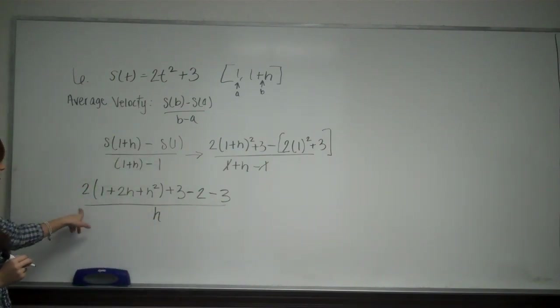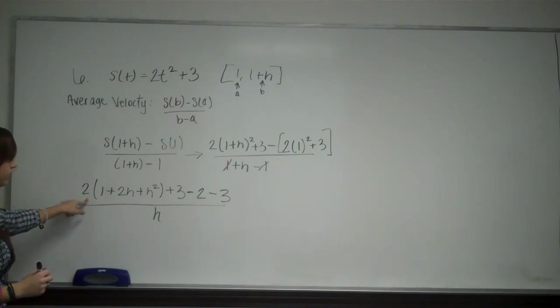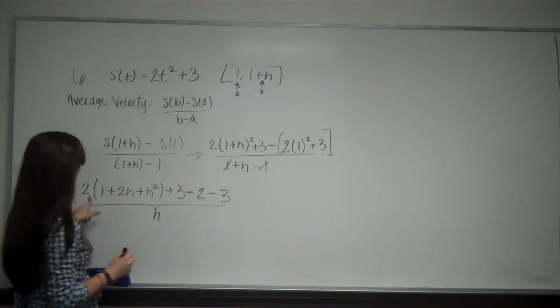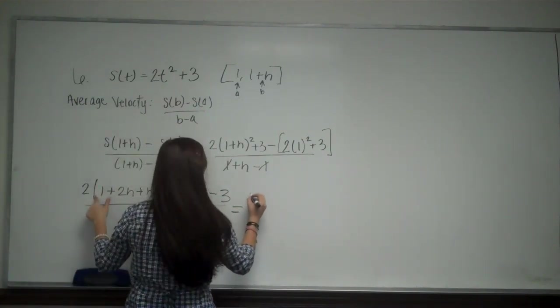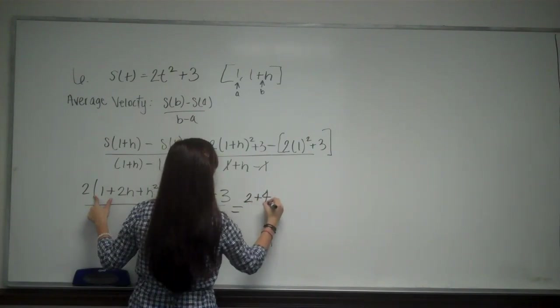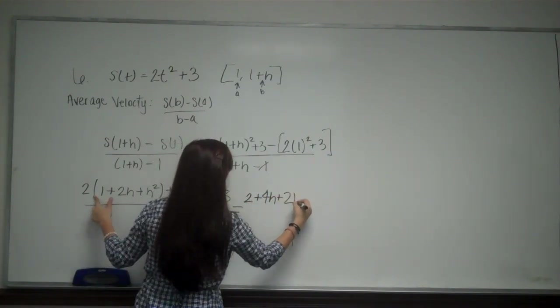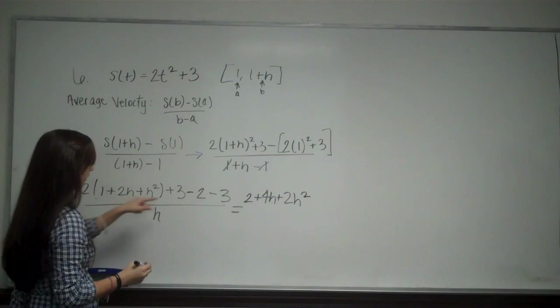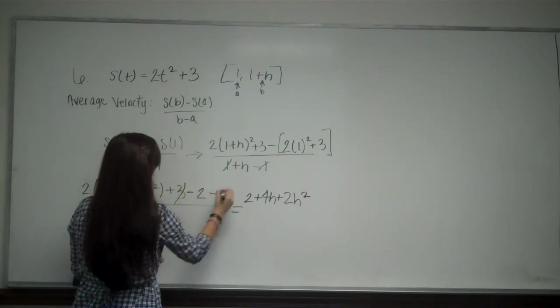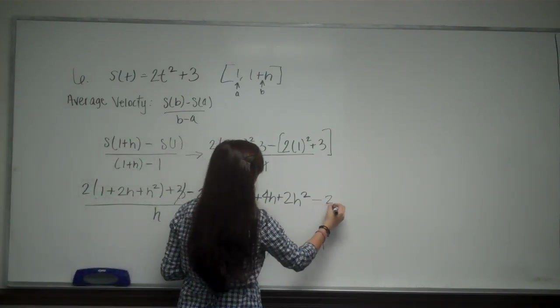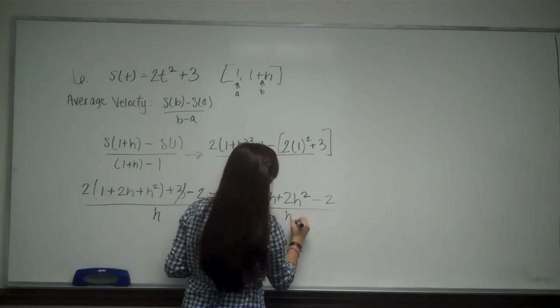All I have to do is further simplify this. I'm going to distribute the 2 here. So this is going to equal 2 plus 4h plus 2h squared. Now, from here, I can see that my 3's cancel. So I'm left with minus 2 over h.